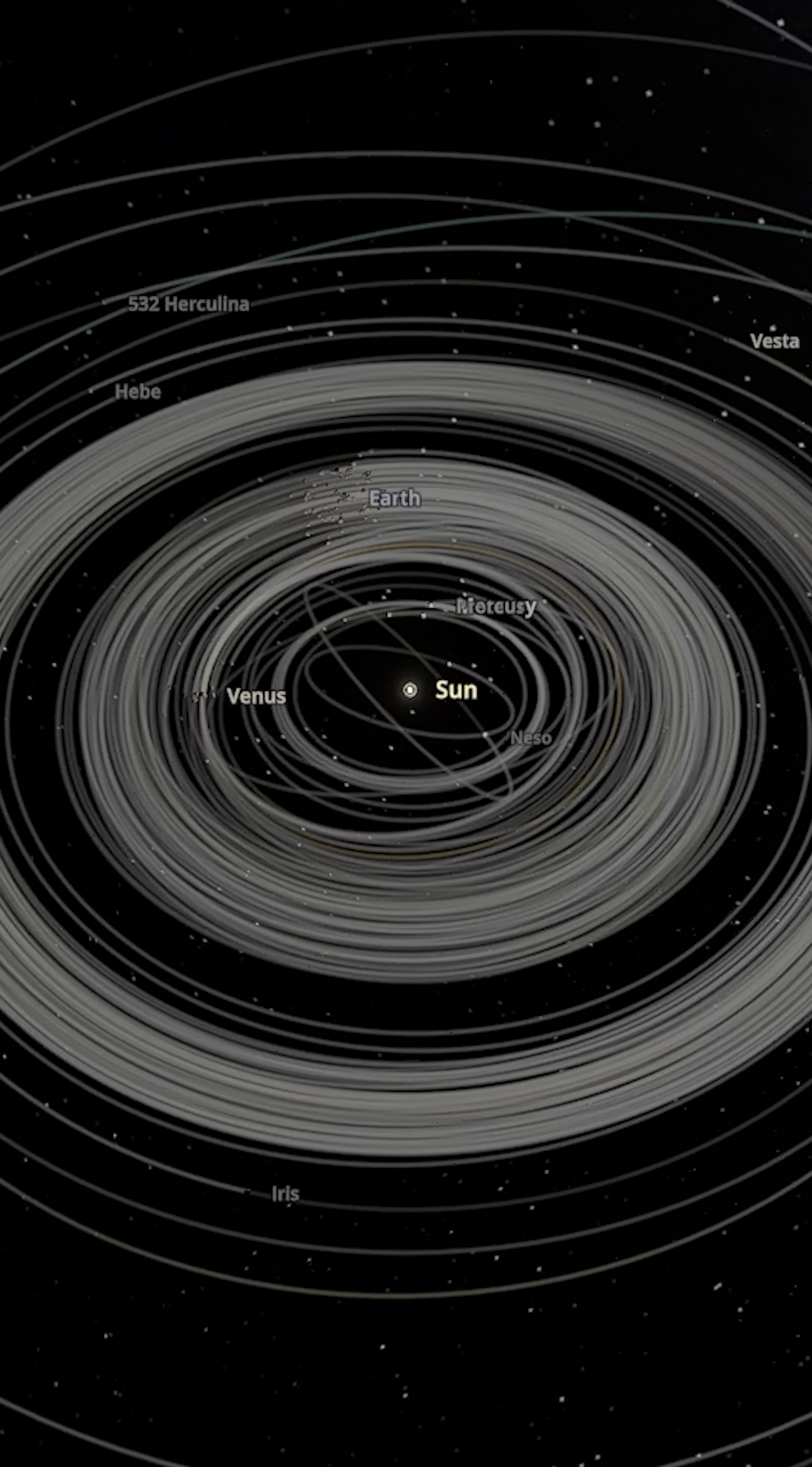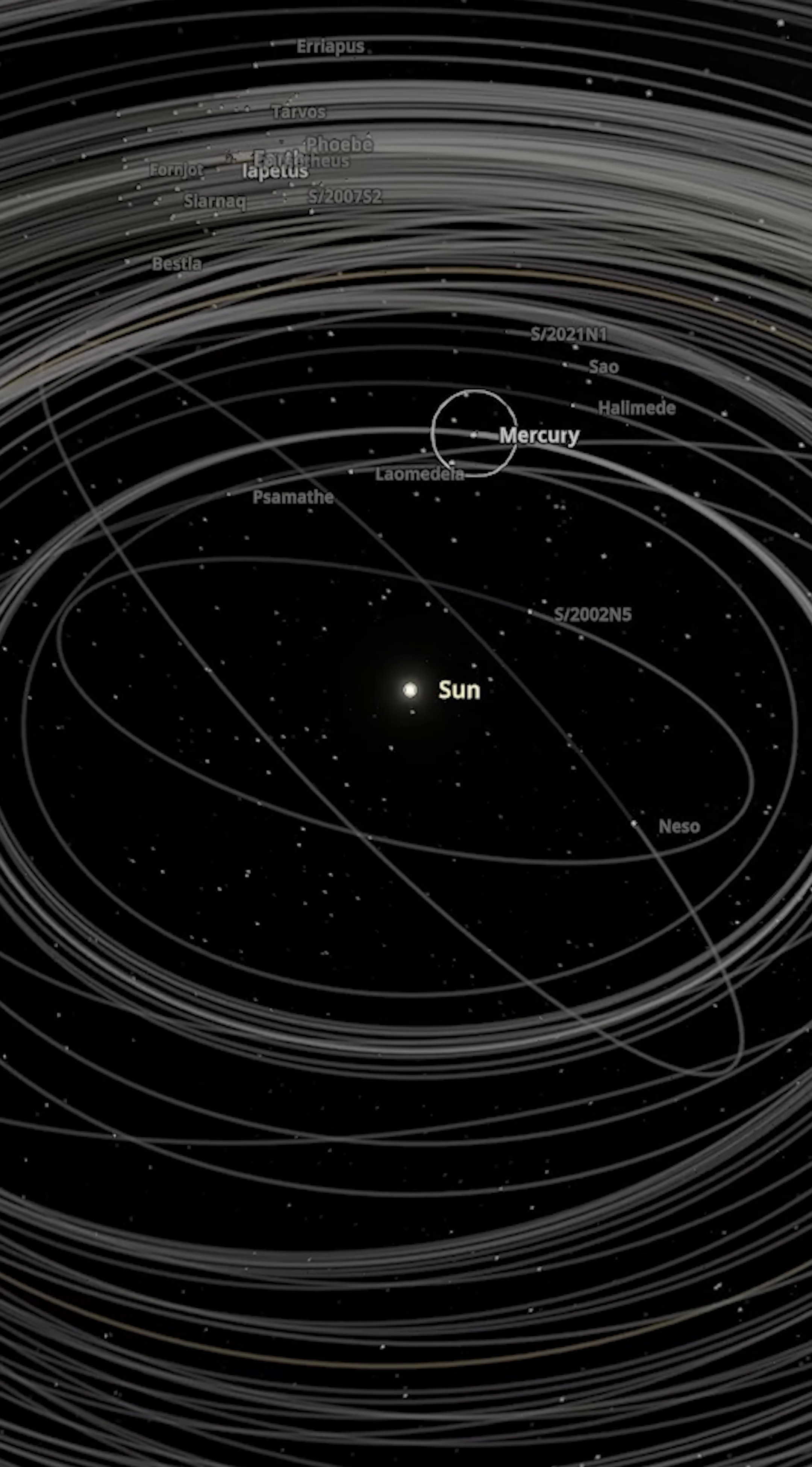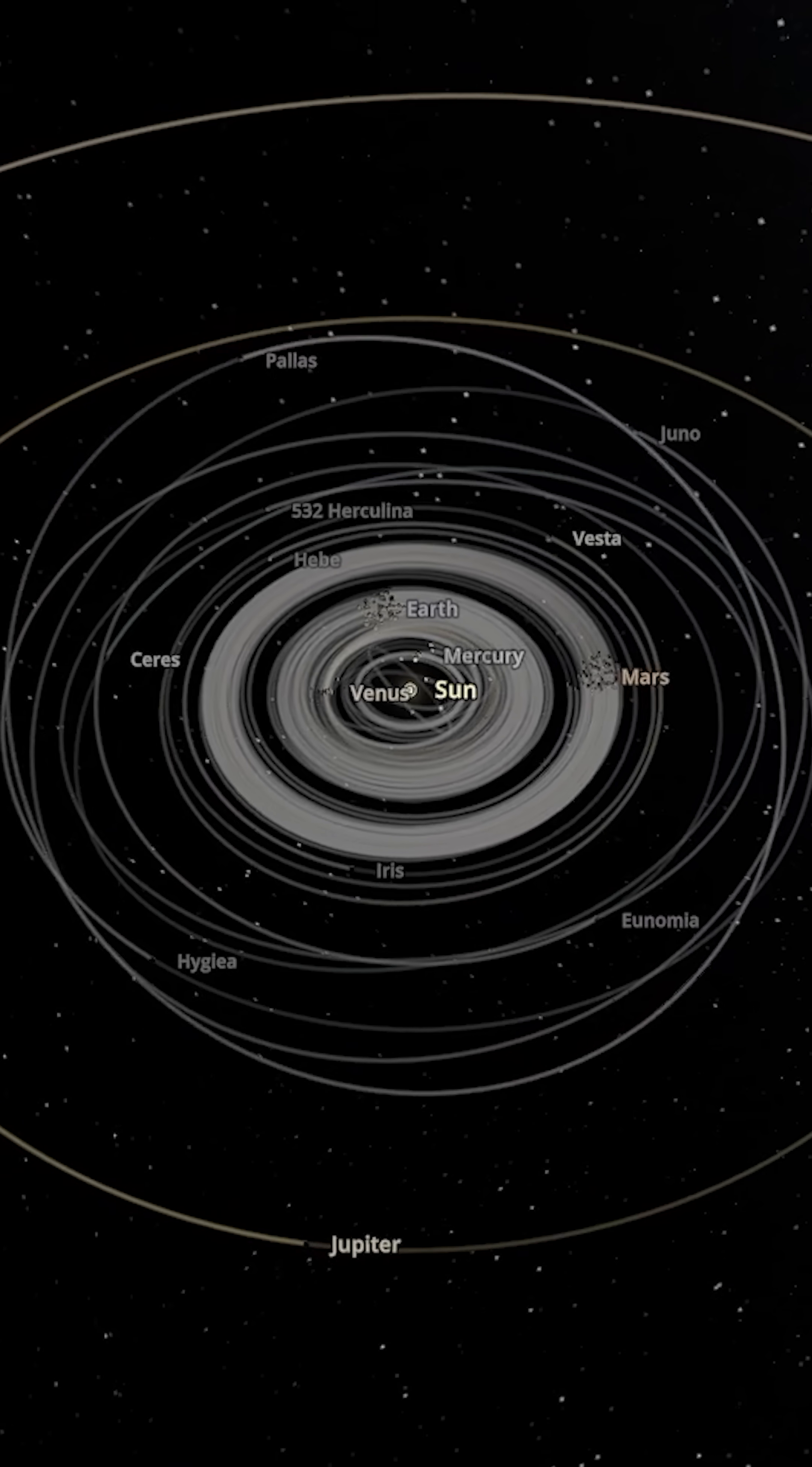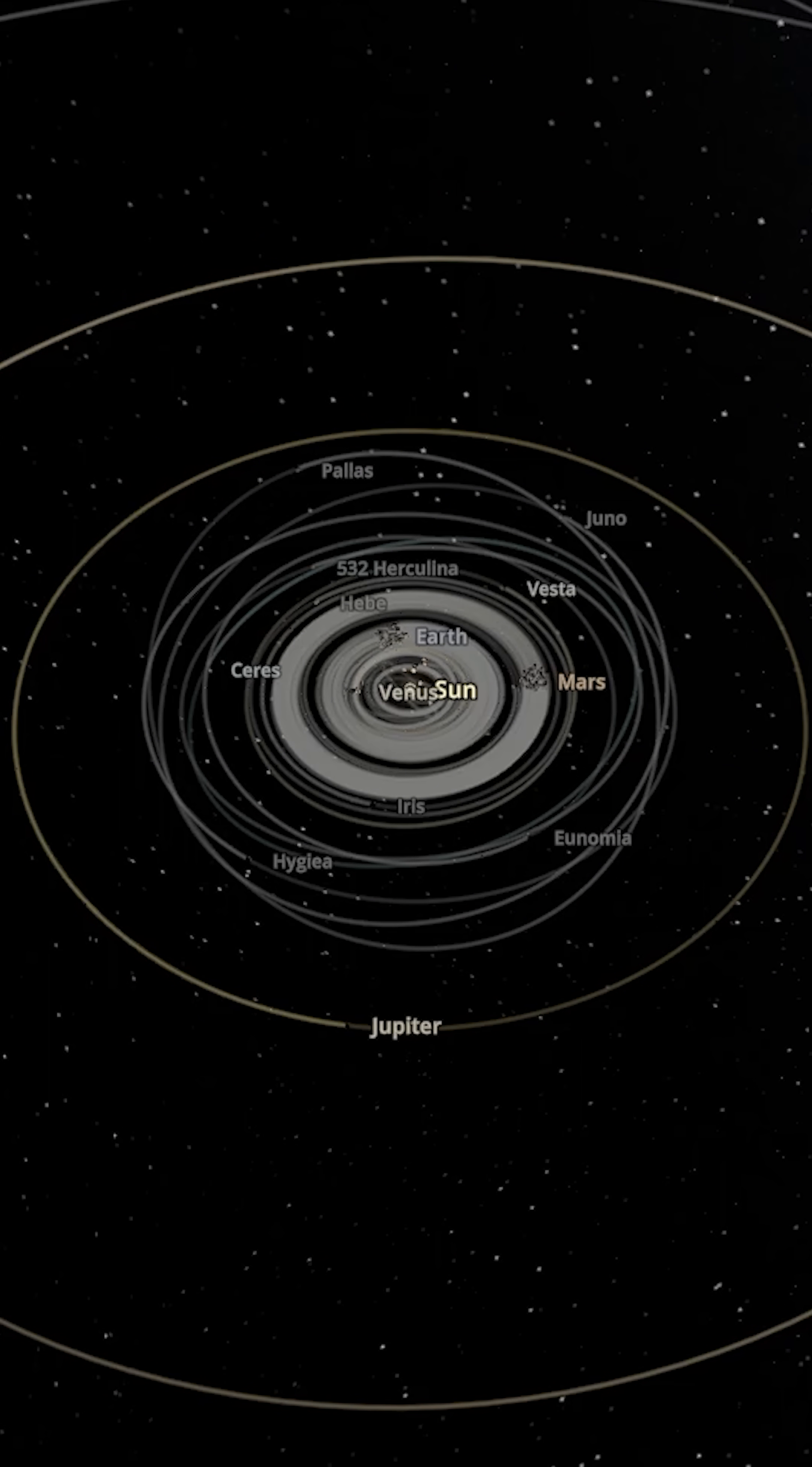Mercury has Neptune's moons, Venus has Uranus's, Earth has Saturn's, Mars has Jupiter's, Jupiter has Mars's moons, and lastly Saturn has the moon of Earth. Pretty easy. Saturn's gonna hold on to that moon.